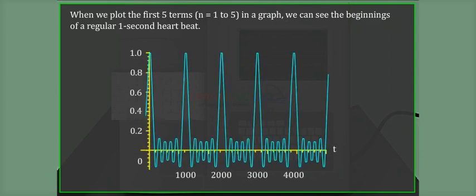When we plot the first five terms, that is n equals 1 to 5, in a graph, we can see the beginnings of a regular one second heartbeat. Thank you.